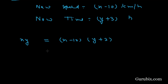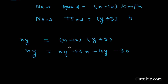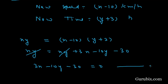Multiplying these two binomials, we have xy plus 3x minus 10y minus 30. We cancel out the xy terms, giving us 3x minus 10y minus 30 equals 0. This is Equation 2.